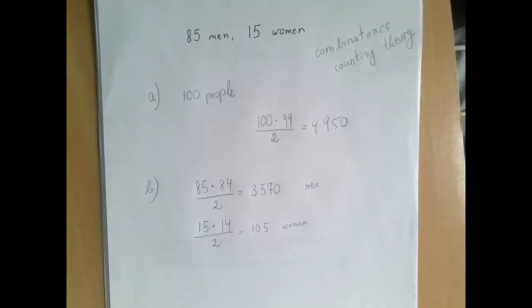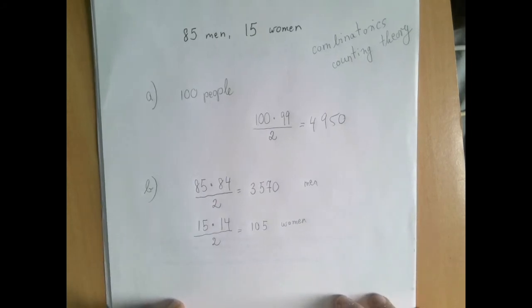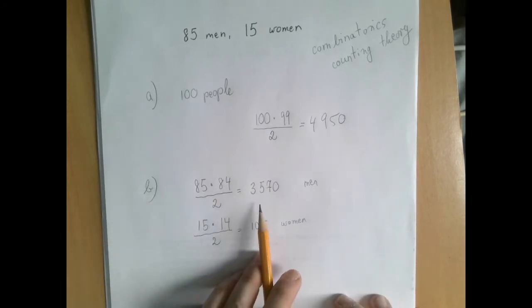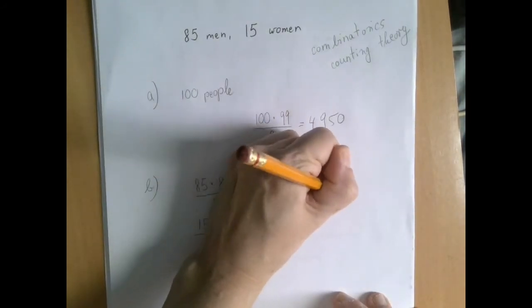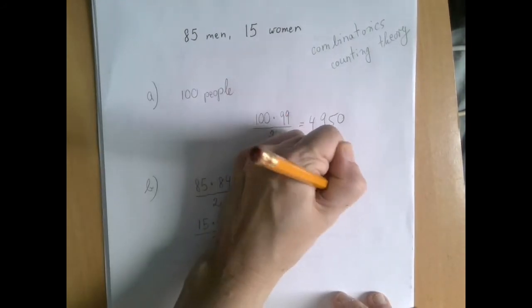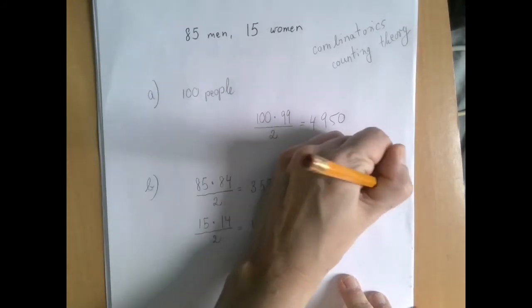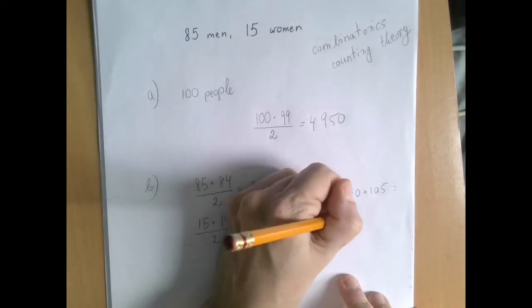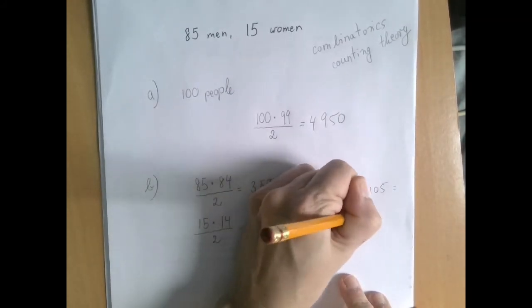And to find the total number of handshakes, we simply have to add the handshakes among the men and the handshakes among the women. So the final answer is 3570 plus 105, which is 3675 handshakes.